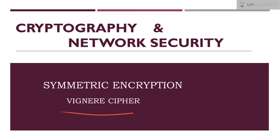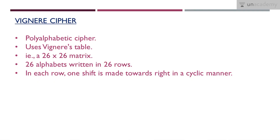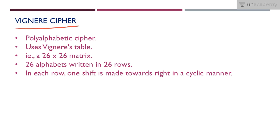In this lesson we have the Vigenère cipher, which is a polyalphabetic cipher. We are discussing substitution ciphers, specifically polyalphabetic substitution ciphers. We have learned many ciphers so far, and in this lesson we have a special one — the Vigenère cipher. In this method, we are using Vigenère's table or Vigenère's matrix, which is a 26 by 26 matrix.